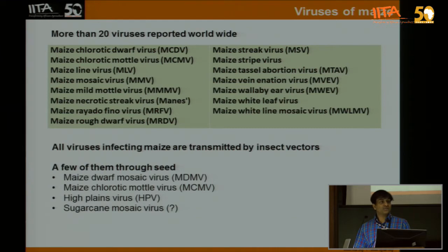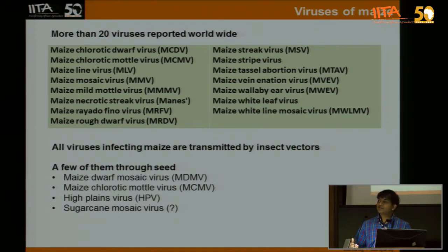Although there are 20 viruses reported to infect maize, only three are known to spread through seed: maize dwarf mosaic, maize chlorotic mottle, and high plains virus. There is also an unconfirmed study on sugarcane mosaic seed transmission — three confirmed, one suspected. So when we are doing seed health testing, we don't have to worry about all 20 viruses; we just focus on four. For instance, if we were doing seed health testing in Nigeria, which one do we target?